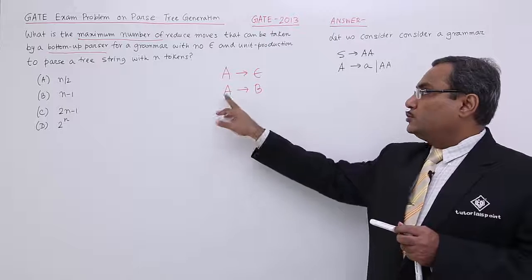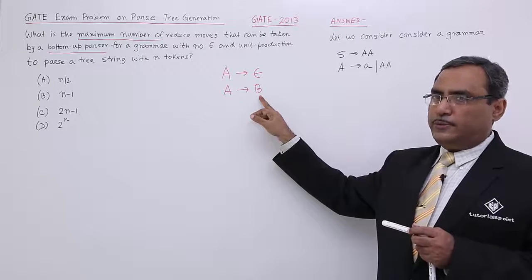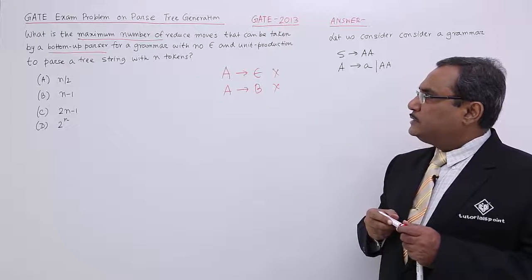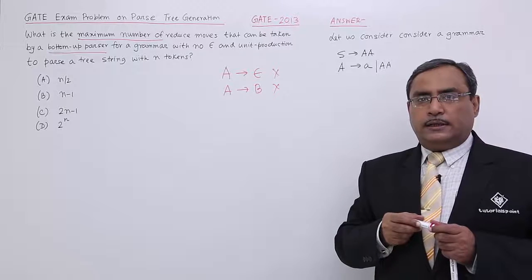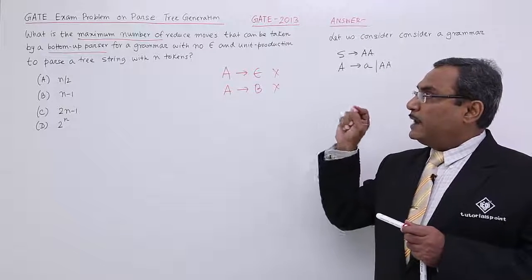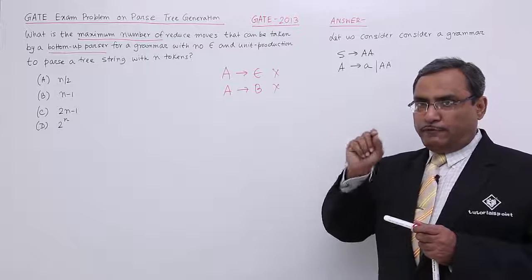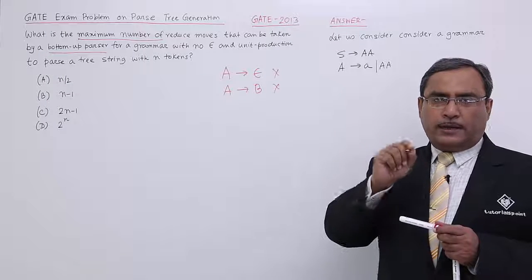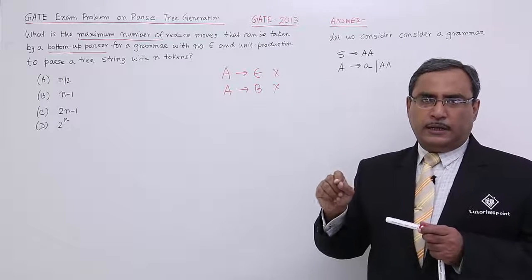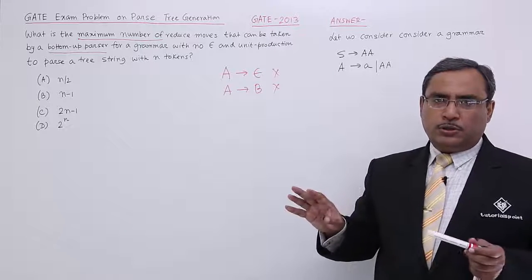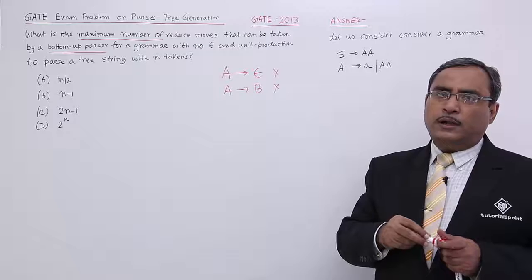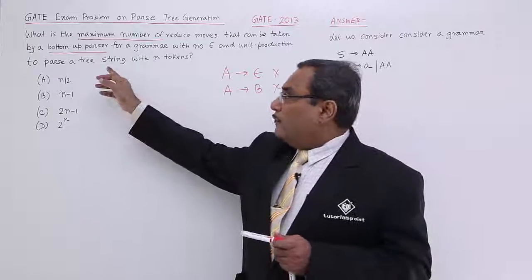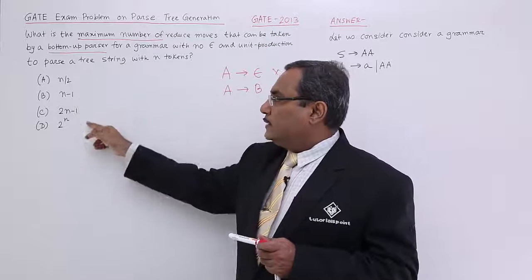A non-terminal producing a non-terminal is known as unit production. These sorts of productions are not allowed. We need to parse a string with n tokens and find the maximum number of reduce moves required for a bottom-up parser, where A produces epsilon and A produces another non-terminal B are both disallowed.